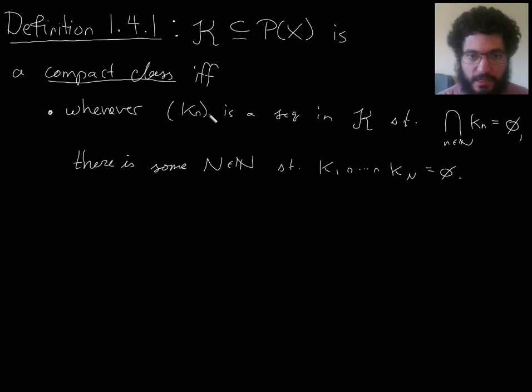whenever you have a sequence in fancy k, or an at most countably infinite family of subsets that are in fancy k, which intersect emptily, whose overall intersection is empty, then there's some n, so that if you intersect up to n, then that's already empty.